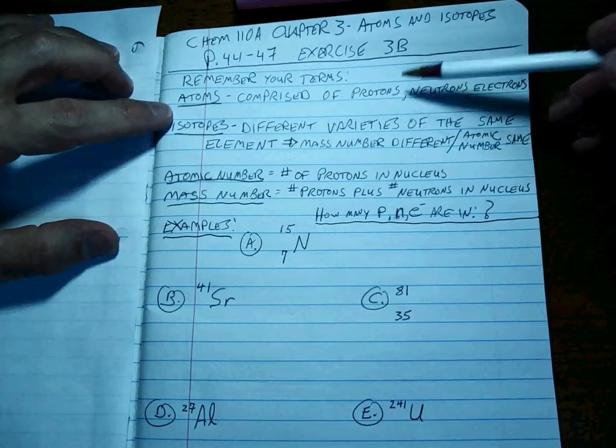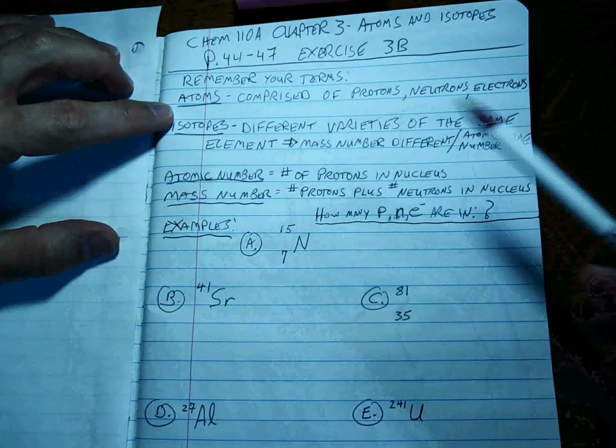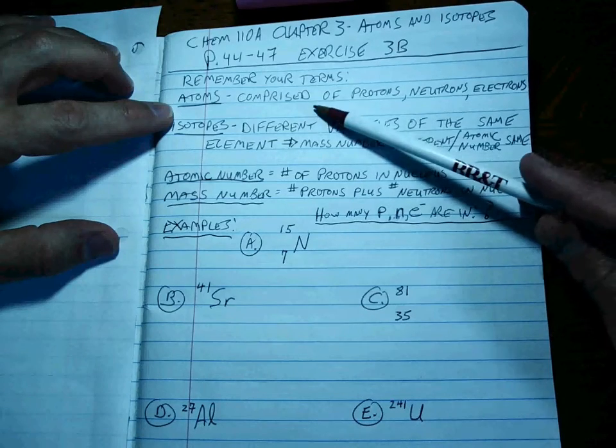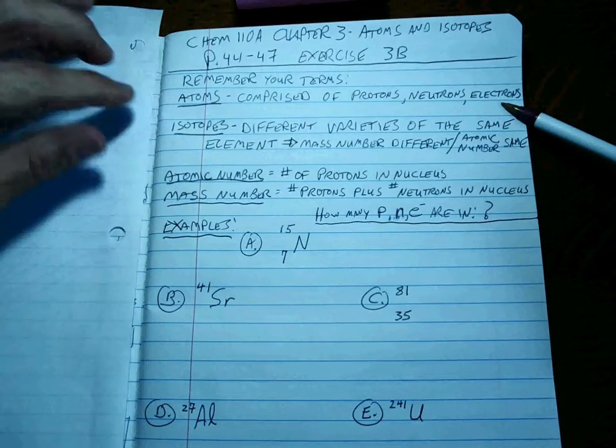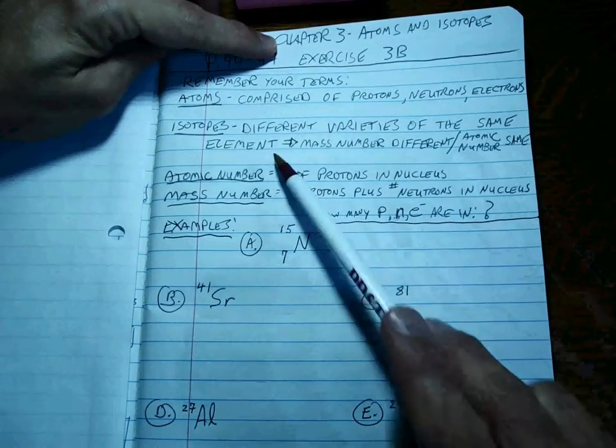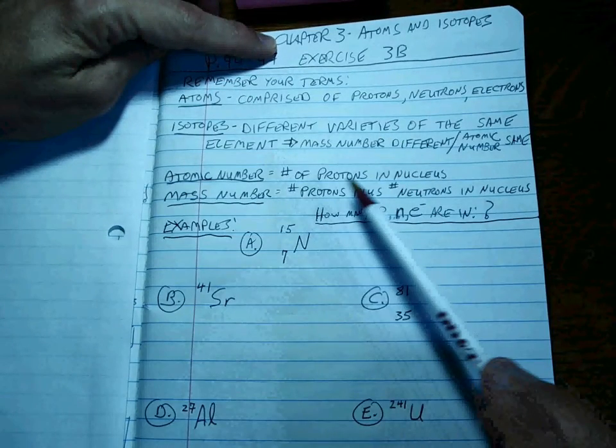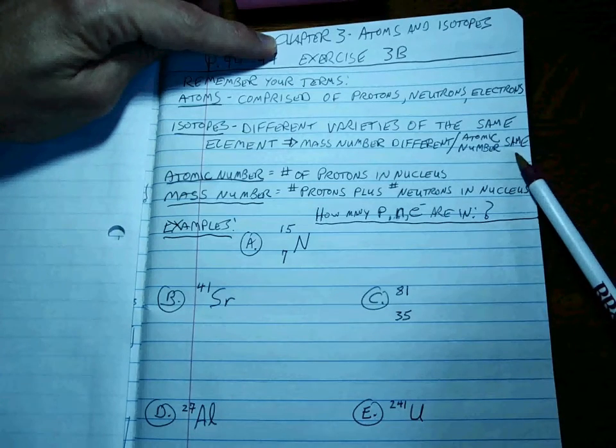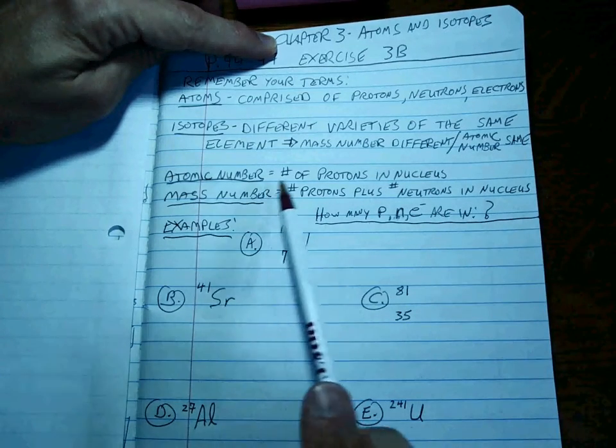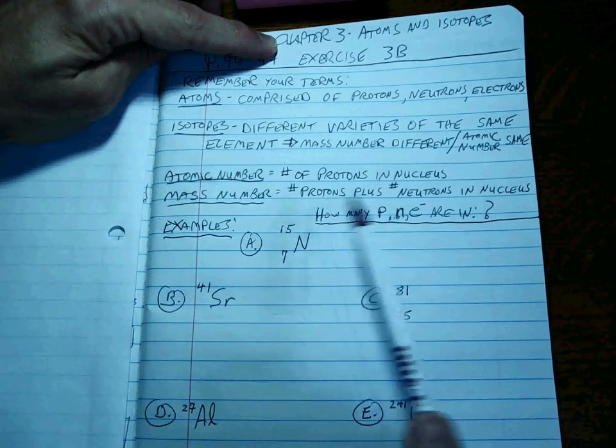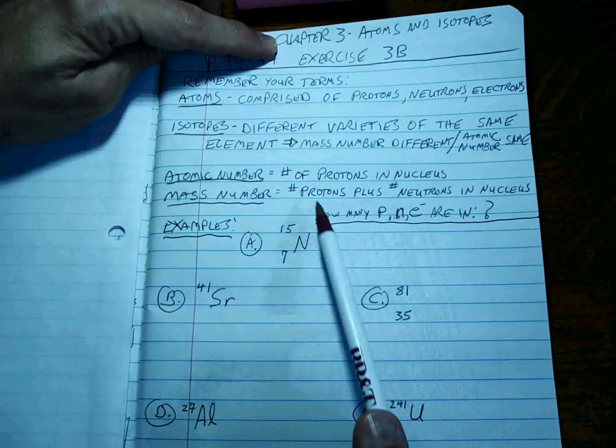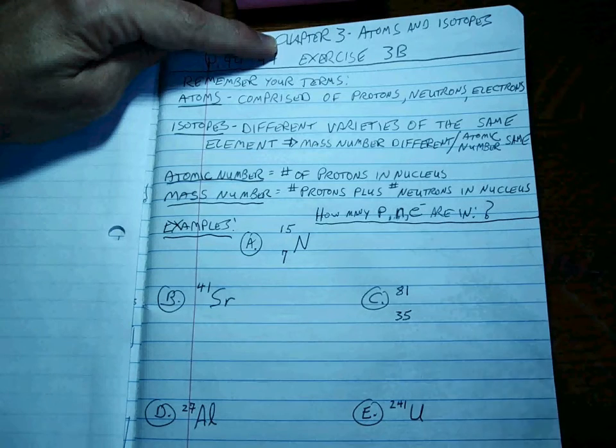First things first, remember your terms. An atom is a neutral thing and it's comprised of protons, neutrons, and electrons. An isotope is just a different variety of the same element. The mass number is different, but the atomic number is the same. Remember that the atomic number is the number of protons in the nucleus, and the mass number is the counting up of all the protons and all the neutrons in that nucleus.